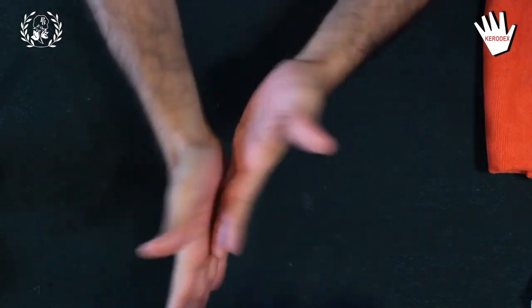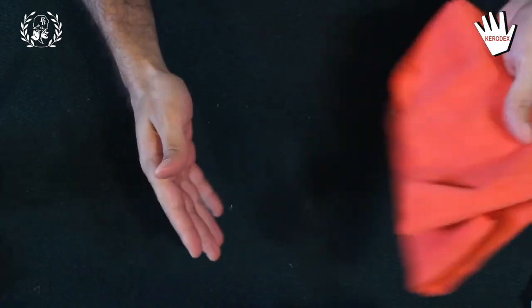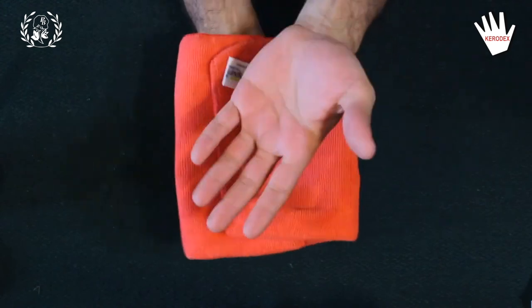5. Kerodex Barrier Cream should be reapplied after every 3 hours under normal conditions. Workers should wash their hands after work before going on their breaks.